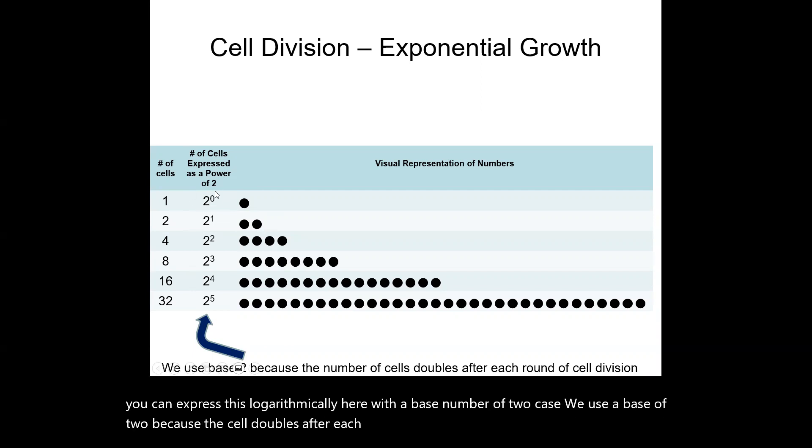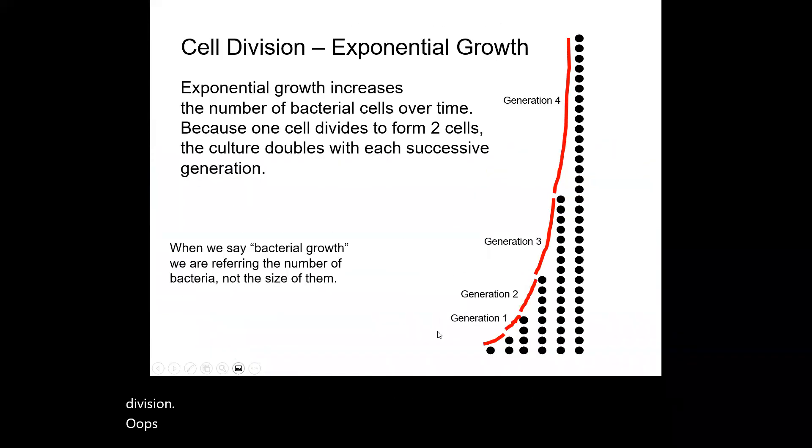So two raised to zero represents our initial number of bacteria. In this case, we're starting from one. But then after one round of division, we notice that it's now base two exponent number one, and that would just go on for each round of division. And so this is just showing you how cells grow exponentially.